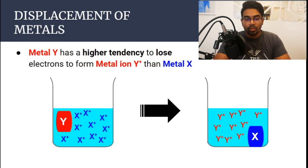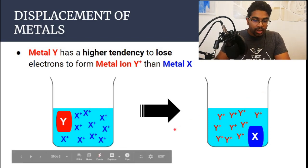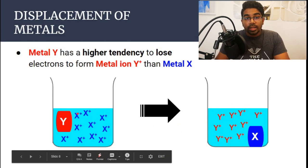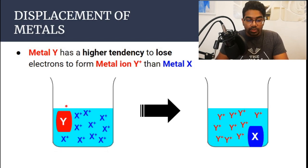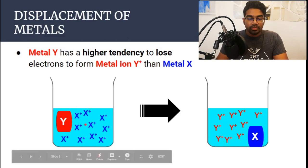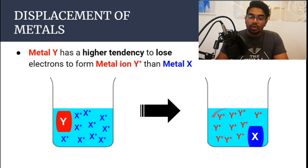Let's look at the example of metal Y and X again. If metal Y is more electropositive than metal X, that would also mean that metal Y is more reactive than metal X, and then metal Y has the ability to displace X from the salt solution — from the ionic form, X will be displaced out to the solid form, and metal Y will form the ions.